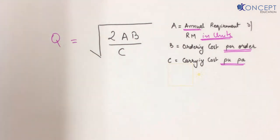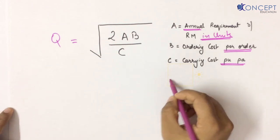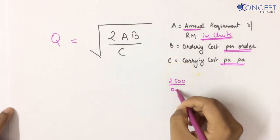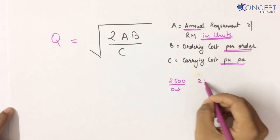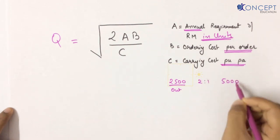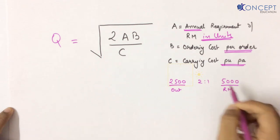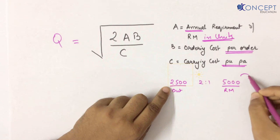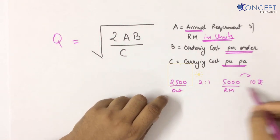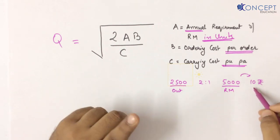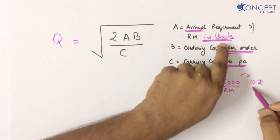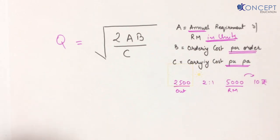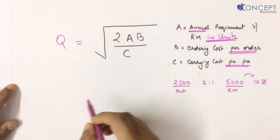Now let's recall our example. In our example, we had to produce 2500 output and we had... no, no, no. What do I need? I need annual requirement of raw material in units. So I have my A or not? Yes, I have it.